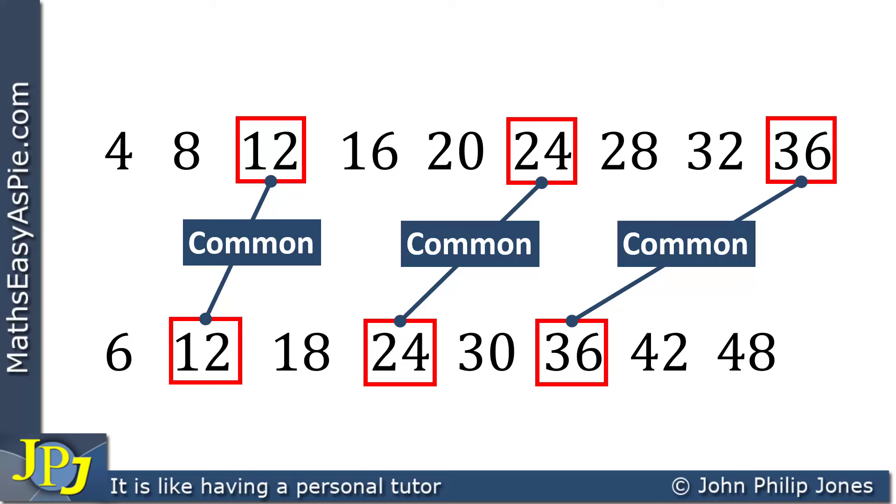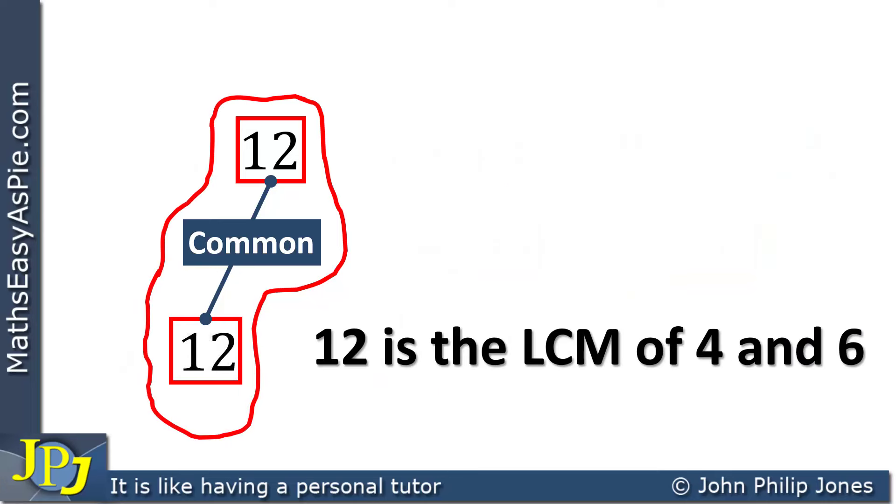So, of the 12, 24, and 36, which are all common multiples, which is the lowest number? Of course, the answer is straightforward. It is 12. So, 12 is the lowest common multiple of 4 and 6.